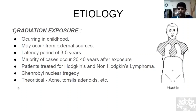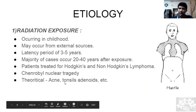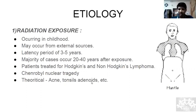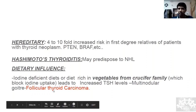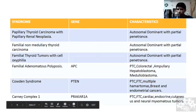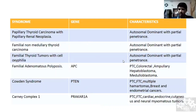Hereditary factors: key genes include PTEN, BRAF, and RET proto-oncogene in medullary carcinoma. Hashimoto's thyroiditis predisposes to lymphoma. Dietary: iodine deficiency leads to multinodular goiter, which can develop into follicular thyroid carcinoma in the future.